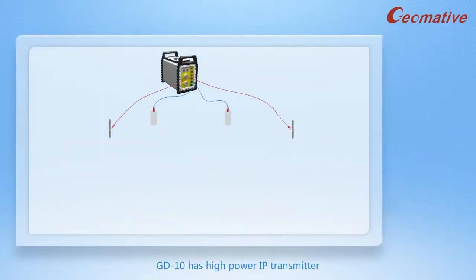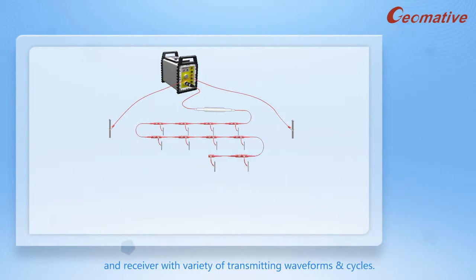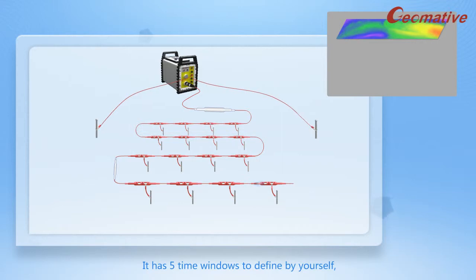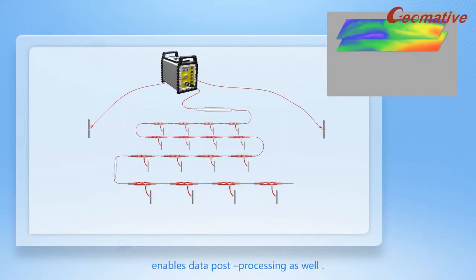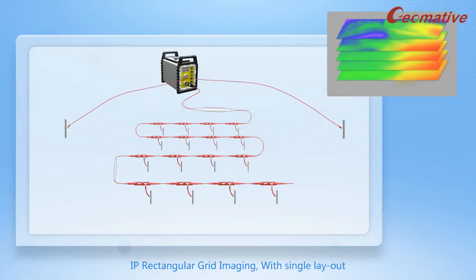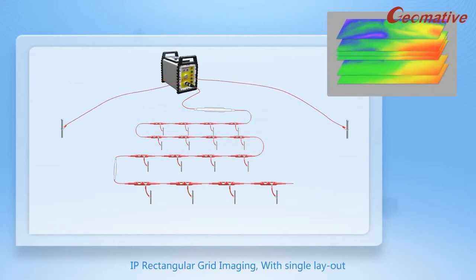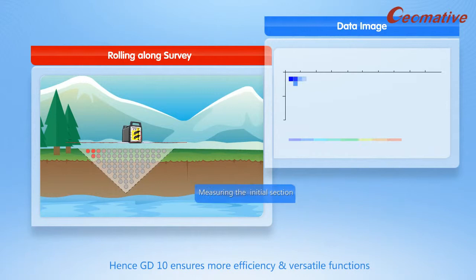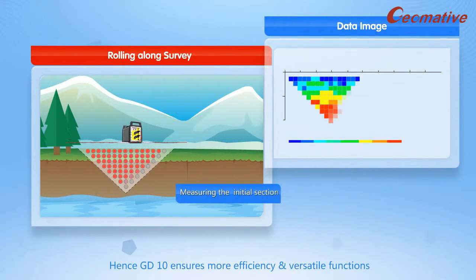GD-10 has a high-power IP transmitter and receiver with a variety of transmitting waveforms and cycles. It has five time windows definable by yourself and enables data post-processing as well. Using the ERI component, you can make high-power IP rectangular grid imaging with a single layout and finish imaging for an entire cross-section. Hence, GD-10 ensures more efficiency and versatile functions.